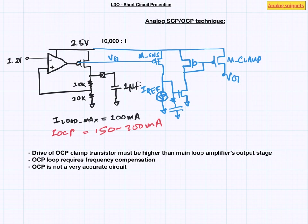Where to break the loop? Since there are 2 loops, you want to break the loop at the common point. And common point is the gate of the power transistor. Just make sure that the clamp is connected before the break.